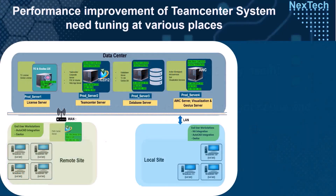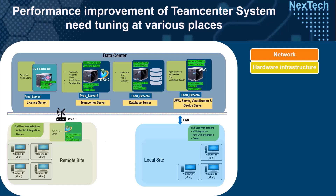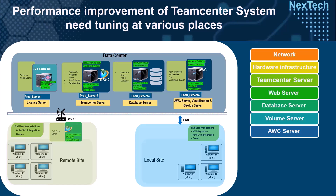Given the size and complexity of your Teamcenter deployment, there are a number of places where performance problems can arise due to configuration or environmental issues. This can include the network involved in the PLM ecosystem, hardware infrastructure such as OS, RAM, and disk on which Teamcenter is deployed, and various Teamcenter components including web, database, volume, Active Workspace, Visualization, and FMS server.